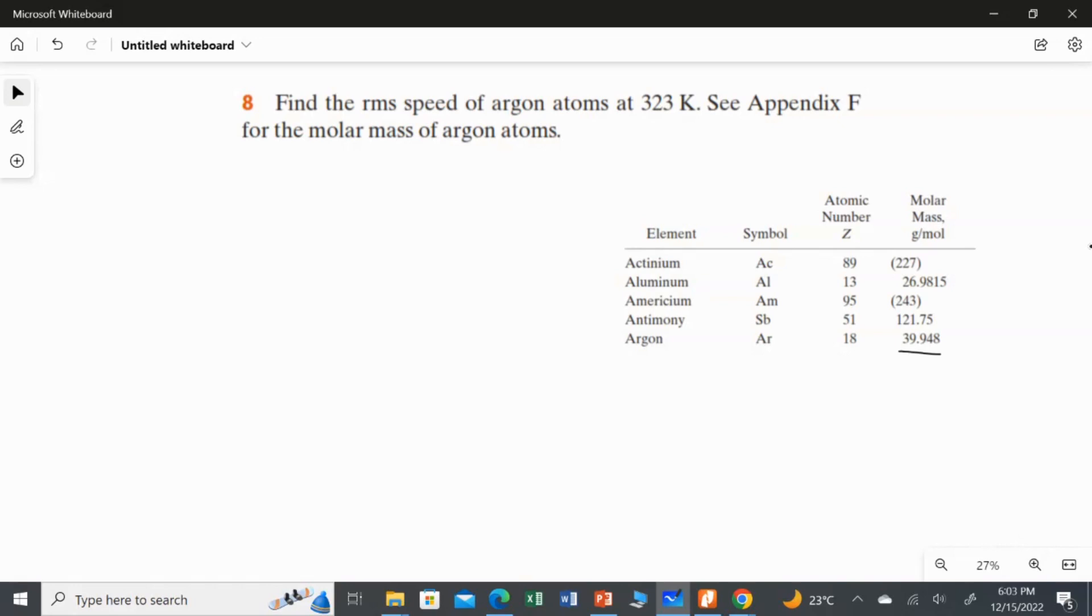So we already studied the formula for the RMS speed for a particular temperature. The formula for the RMS speed is given by the relation V_RMS equal to square root of 3RT over the molar mass.